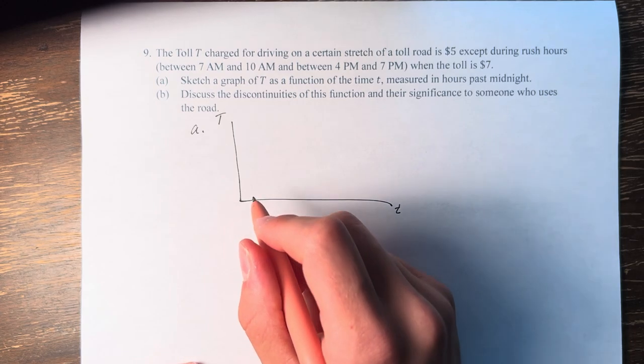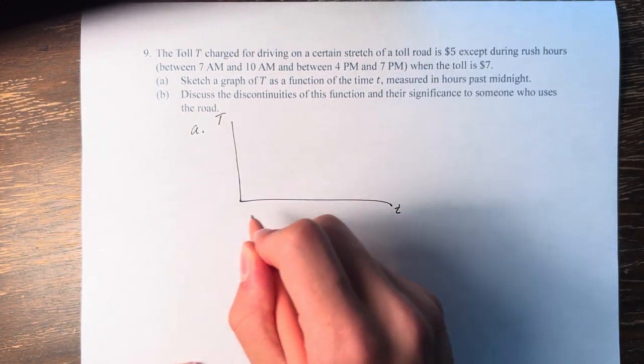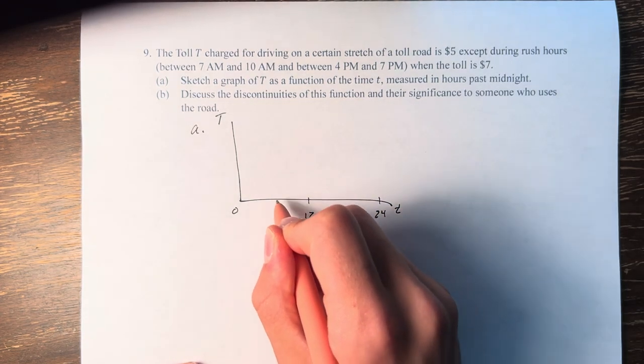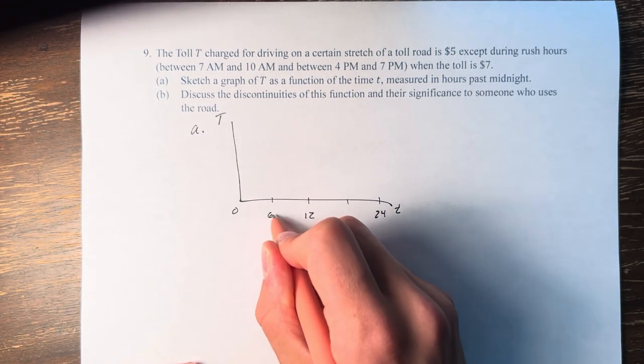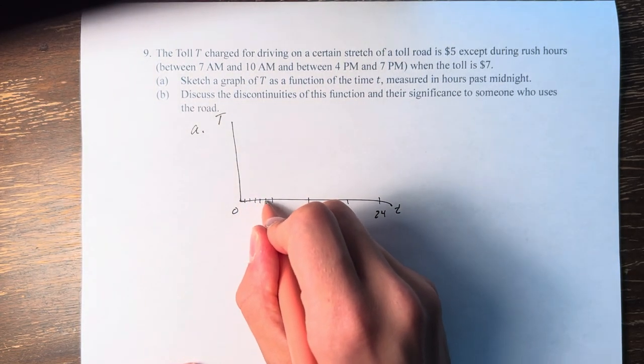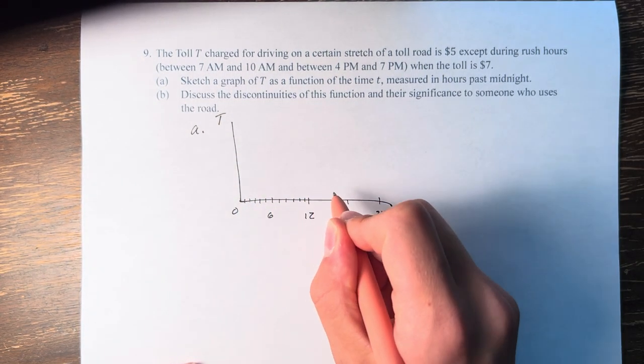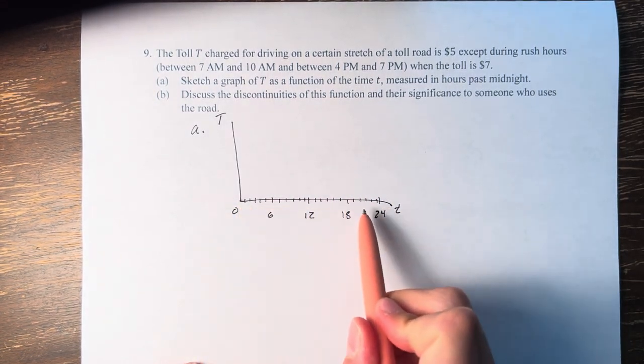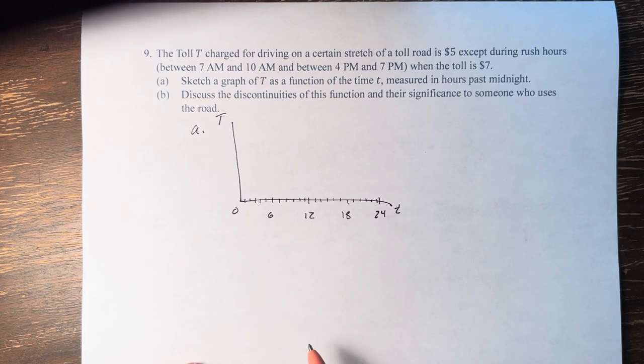We have from 0 to 24, so that's 12, 6, and 18, all of the hours marked on the time axis.